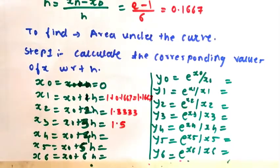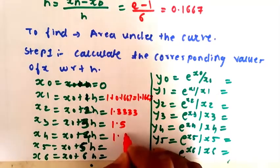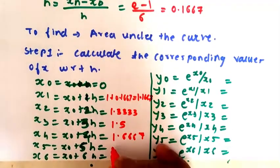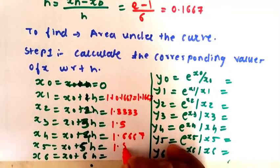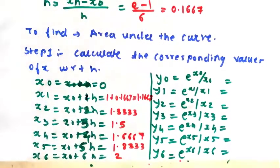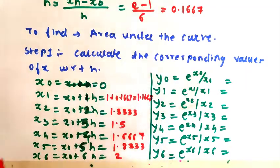x4 is x0 plus 4h, which gives us 1.6667. Similarly, x5 gives us 1.8333, and x6 gives us 2, which is x0 plus 6h. These are the corresponding values of x with respect to h, the step size.